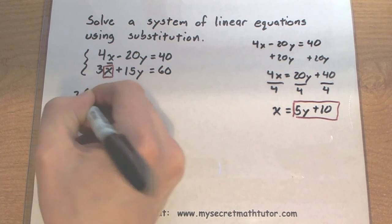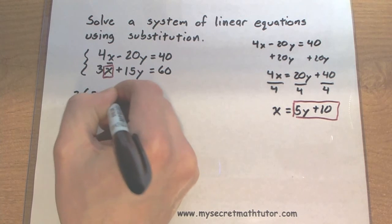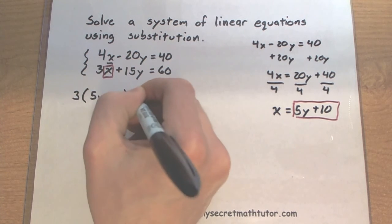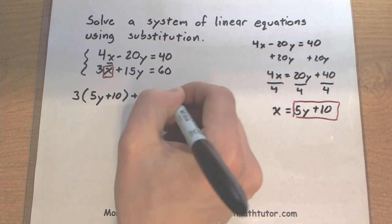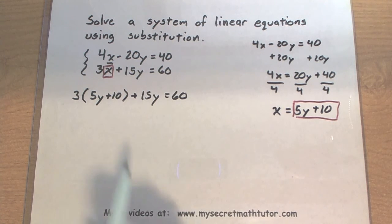I'll write 3 times (5y plus 10) plus 15y equals 60. I've swapped out the x and put in this 5y plus 10.